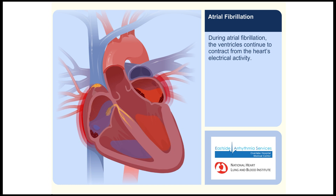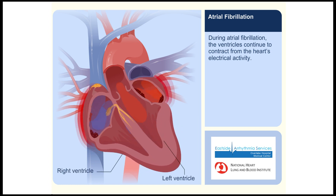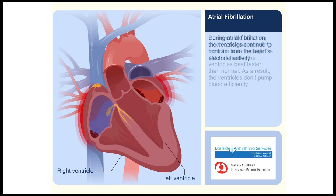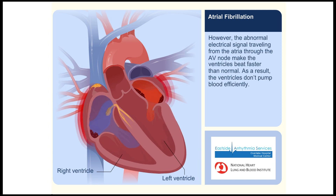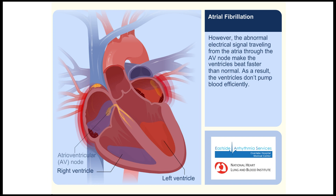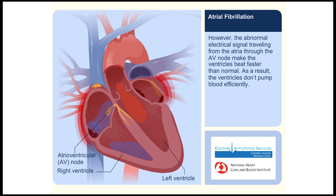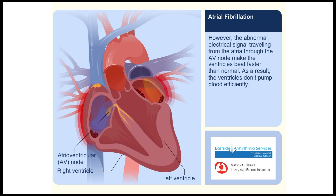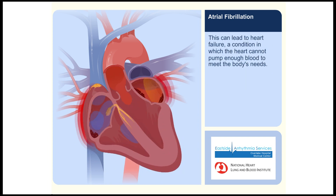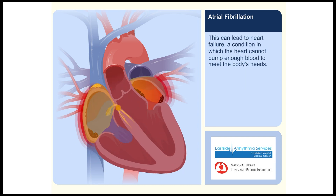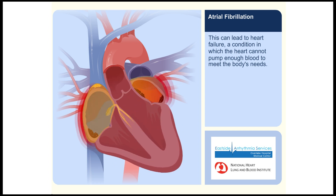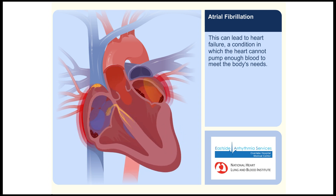During atrial fibrillation, the ventricles continue to contract from the heart's electrical activity. However, the abnormal electrical signal traveling from the atria through the AV node makes the ventricles beat faster than normal. As a result, the ventricles don't pump blood efficiently, which can lead to heart failure — a condition in which the heart cannot pump enough blood to meet the body's needs.